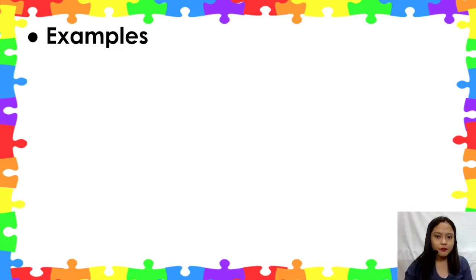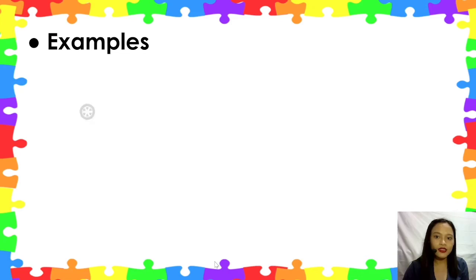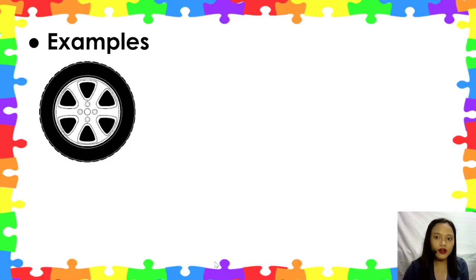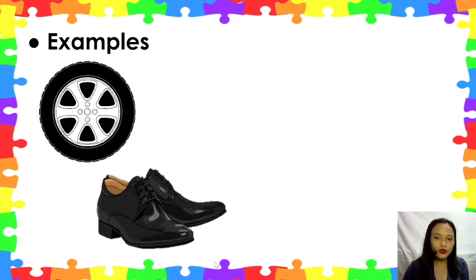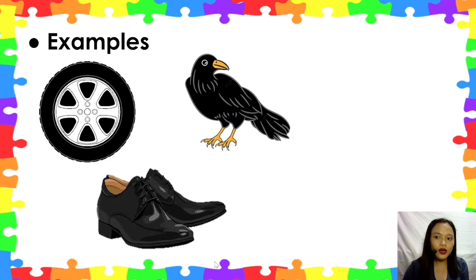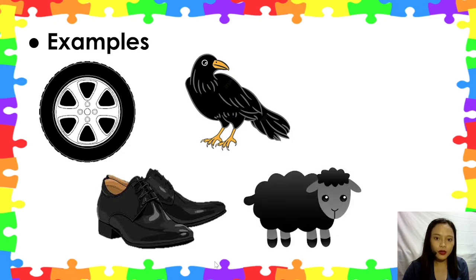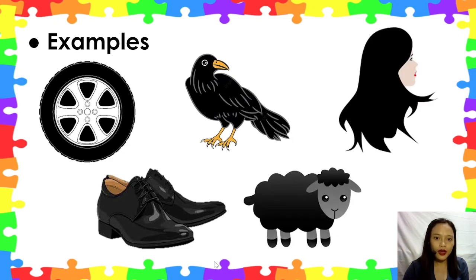Let's have some pictures that are black. Black tire, shoes, crow, sheep, and hair.